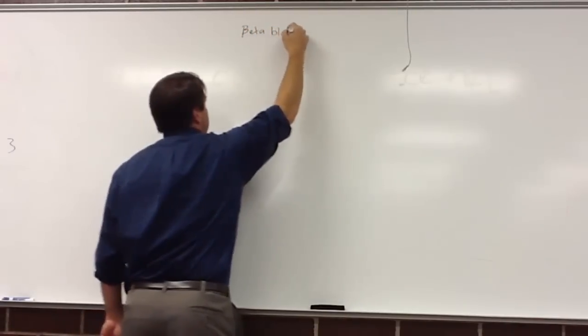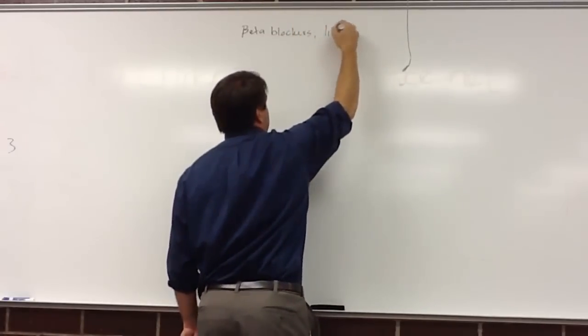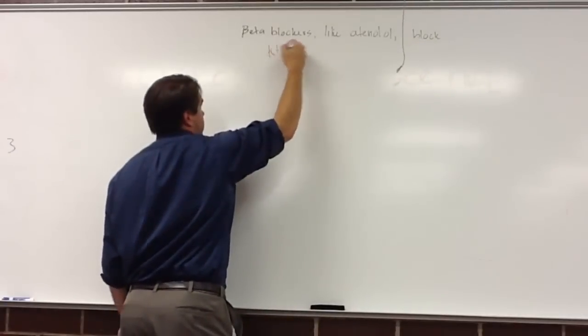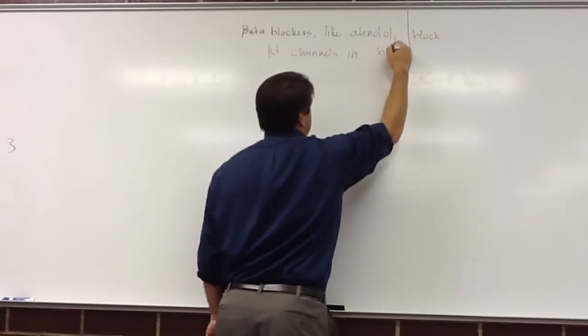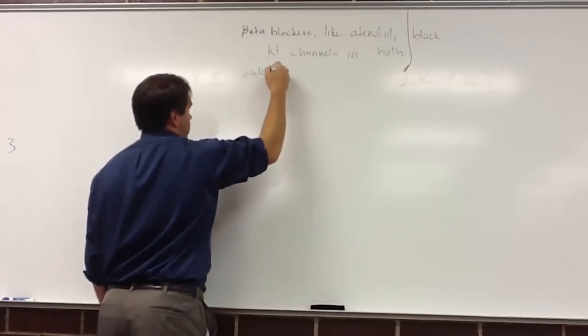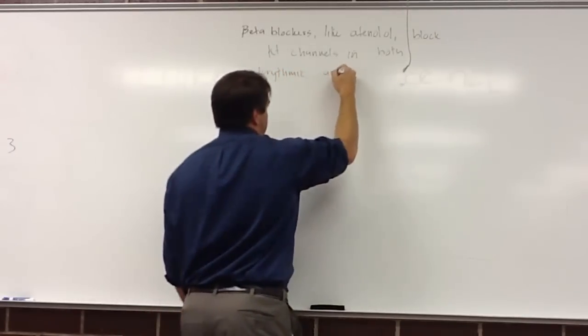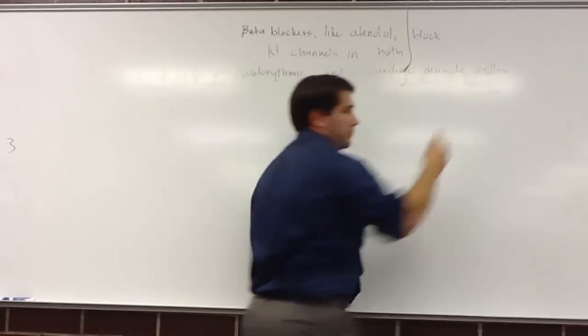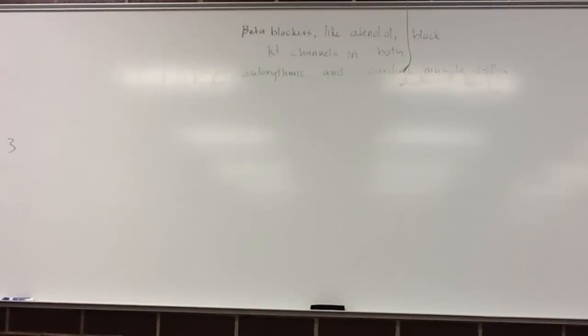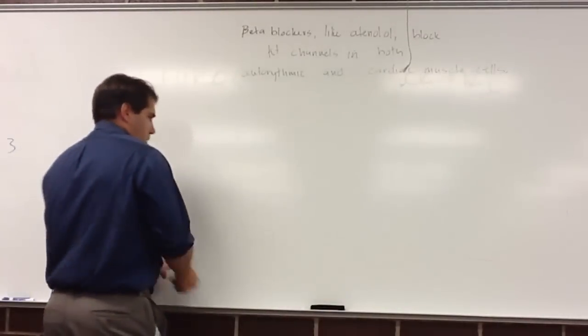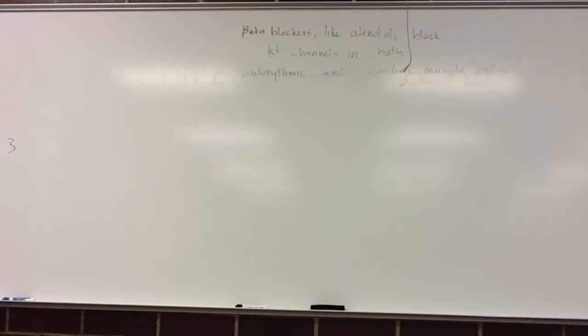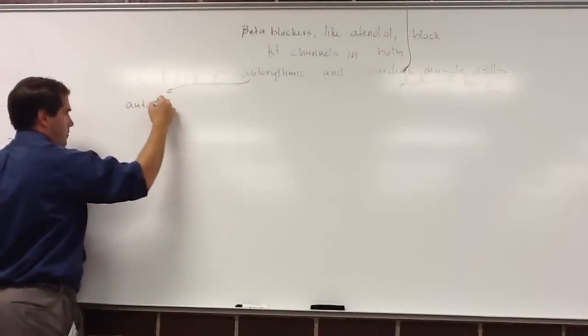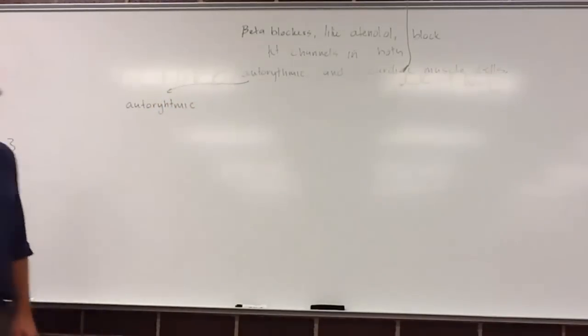Beta blockers, like atenolol, block potassium channels in both autorhythmic and cardiac muscle cells. So over here we'll do autorhythmic first, and then we'll do cardiac muscle over here.